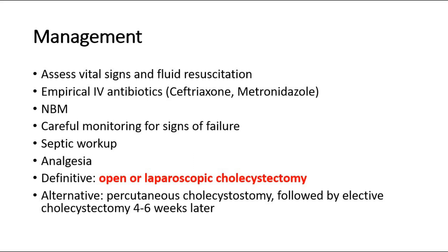The definitive treatment for cholecystitis would be open or laparoscopic cholecystectomy, which is removal of the gallbladder. An alternative treatment is percutaneous cholecystostomy, which is percutaneous catheter placement in the gallbladder lumen under imaging guidance. This is for patients who are not fit for surgery or if early surgery is difficult due to extensive inflammation of the gallbladder.